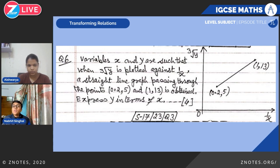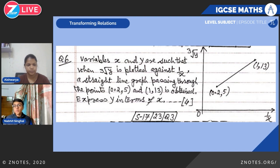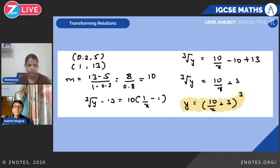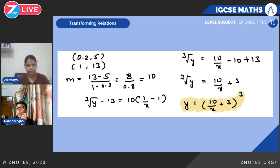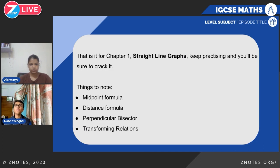Question two: variables x and y are such that when the cube root of y is plotted against 1/x, a straight line passing through (0.2, 5) and (1, 13) is obtained. Express y in terms of x. Using the gradient formula on those two points gives gradient = 10. Substituting the cube root of y for y and 1/x for x: ∛y minus 13 = 10(1/x minus 1). Simplifying gives y = ((10/x) + 3)³.